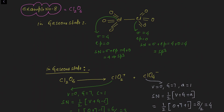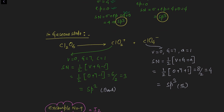Example eight: Cl2O6 in gaseous state. From the Lewis dot structure, each chlorine forms four sigma bonds and has no lone pairs, so steric number = 4 and hybridization is sp3 for each chlorine. In solid state, Cl2O6 consists of ClO2+ and ClO4−. For ClO2+: oxygen is divalent so monovalent atoms = 0, valence electrons of chlorine = 7, cation charge = 1, giving steric number 3 and sp2 hybridization.